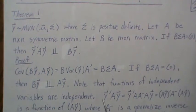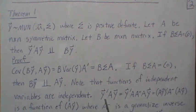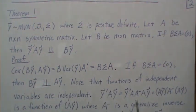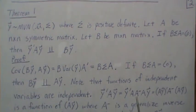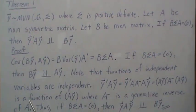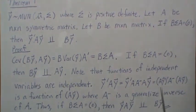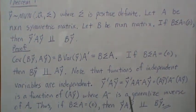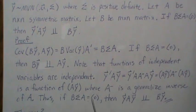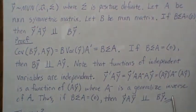Note that functions of independent variables are independent. This quantity AY can be written where A' is a generalized inverse matrix. I have a video called generalized inverse matrices. This quadratic form is actually a function of AY, so if BΣA is zero, then these two quantities are independent.